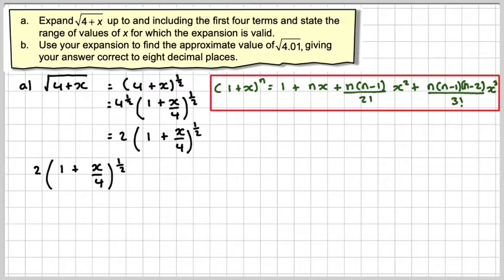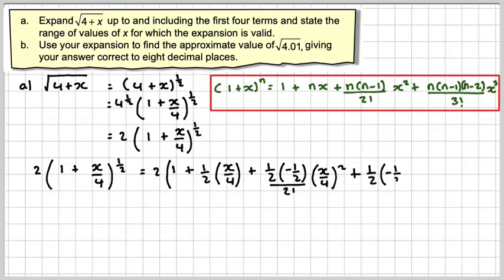So, expanding, don't forget the two in front. We'll put some brackets in. The first term will be 1, the next term will be a half times x over 4. The next term will be half times minus a half over 2 factorial times x over 4 squared. We want the first four terms, so the next one will be a half times minus a half times minus 3 over 2 over 3 factorial times x over 4 cubed.